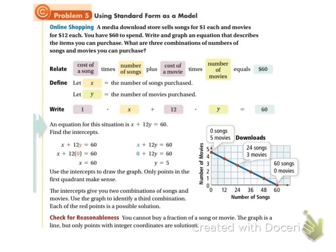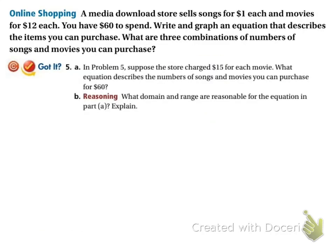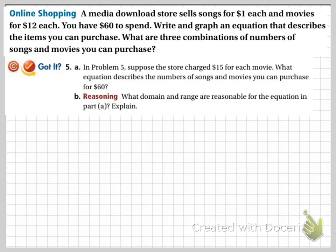The book did a problem about buying songs and movies. We're going to do the same problem, but we're going to use different numbers. So it says a media download store sells songs for $1 each and movies for, and we're going to use $15 instead. So instead of 12, we're going to be talking about $15 movies. Songs are $1. Movies are $15. And we have $60 to spend. We're going to spend it all. The first thing we need to do before we can graph this is we need to come up with an equation.